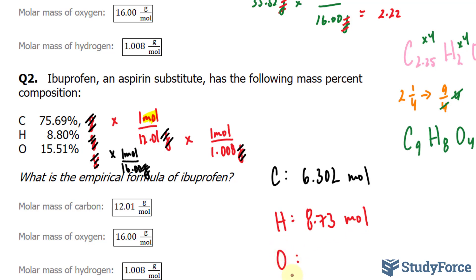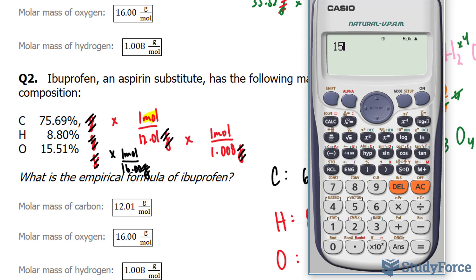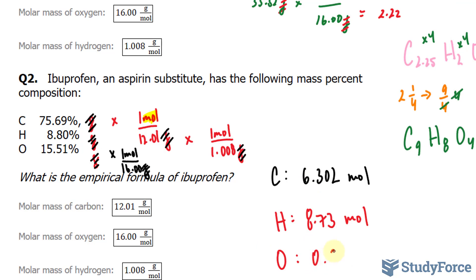And finally, on to oxygen. We should have four significant figures. 15.51 divided by 16.00, four significant figures would mean 0.9694 moles.